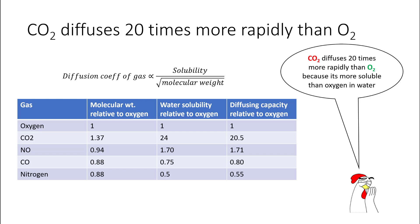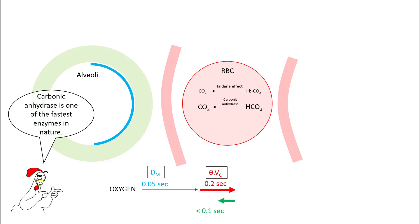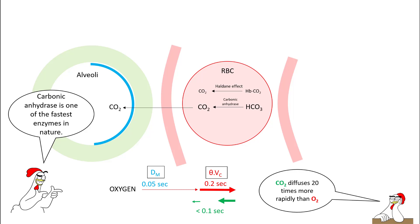CO2 diffuses 20 times more rapidly than oxygen because carbon dioxide is 20 times more soluble in water. Recall that oxygen takes around 0.05 seconds to cross the alveolar capillary membrane and enter the RBCs, and around 0.2 seconds to combine with hemoglobin, giving a total time of around 0.25 seconds for complete oxygenation. CO2, on the other hand, is much faster. CO2 is transported mostly as bicarbonate, and the reactions proceed in less than 0.1 second. Carbonic anhydrase is one of the fastest enzymes in nature, and CO2 diffuses around 20 times faster than oxygen — going from capillaries to alveoli in a matter of milliseconds.